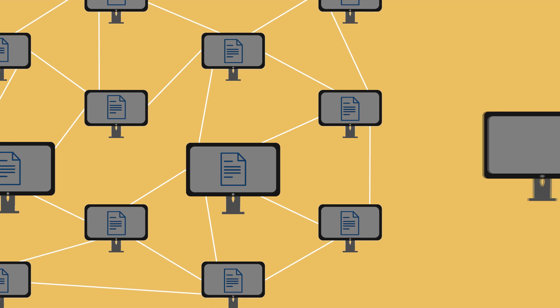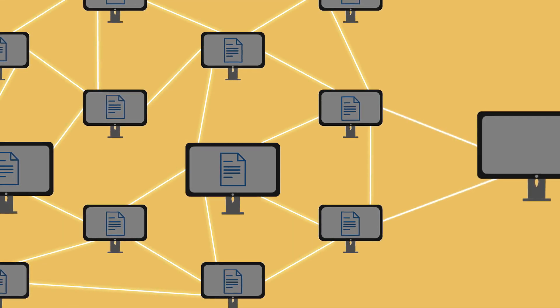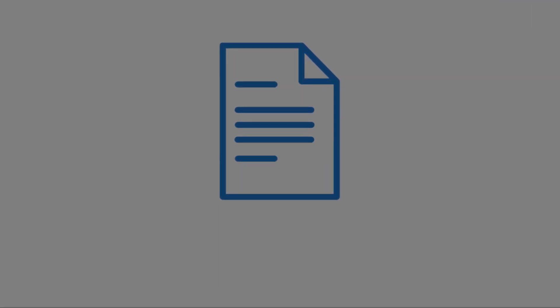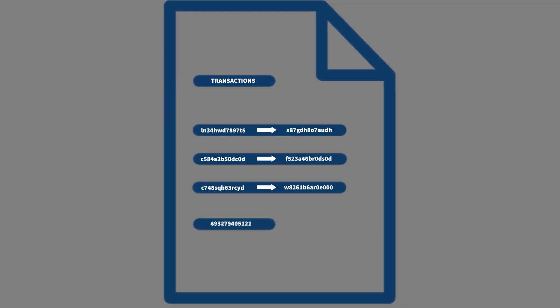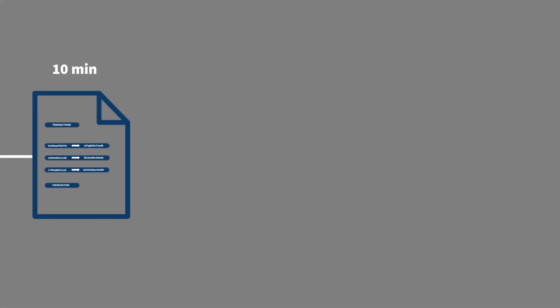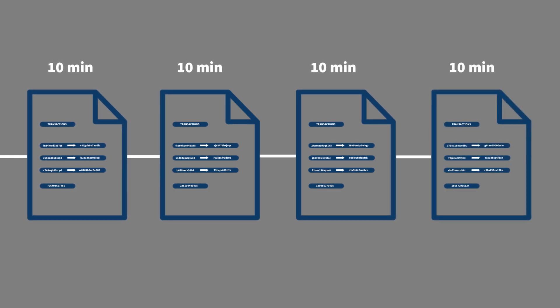A blockchain does nothing else than create a community where if someone is part of this community, they check with all the others: "Can you send me the file of what's been happening?" — basically the information — and then keep an update on this file. Since this happens in blocks of time, and these blocks of time get chained together, this system is called a blockchain.